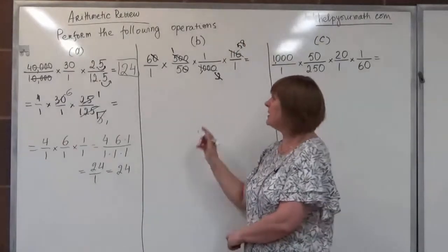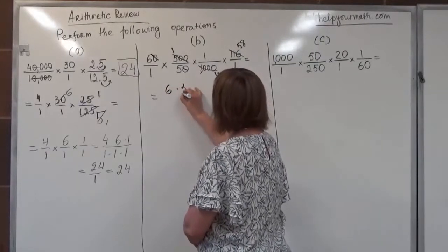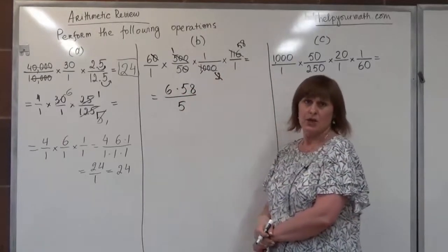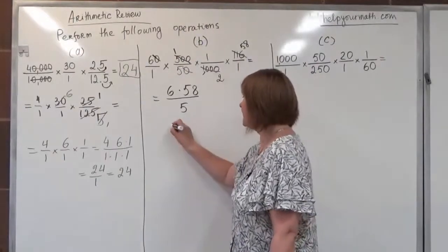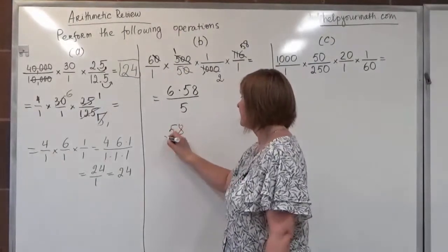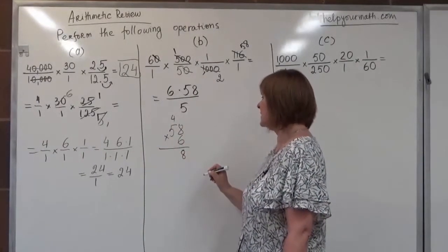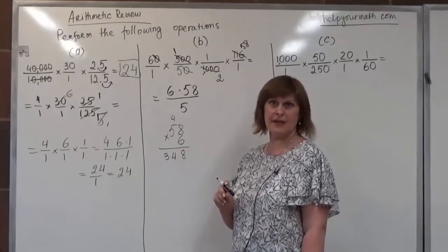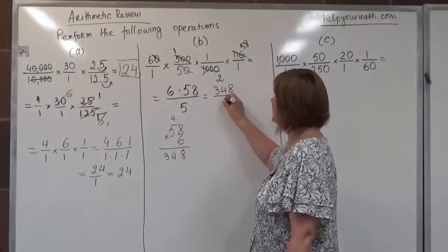The remaining part is 6 times 58 divided by 5. We probably cannot reduce any further. So now we multiply 58 times 6: 6 times 8 is 48, carry the 4; 6 times 5 is 30, plus 4 is 34. That gives us 348 in the numerator, and we now have to divide by 5.